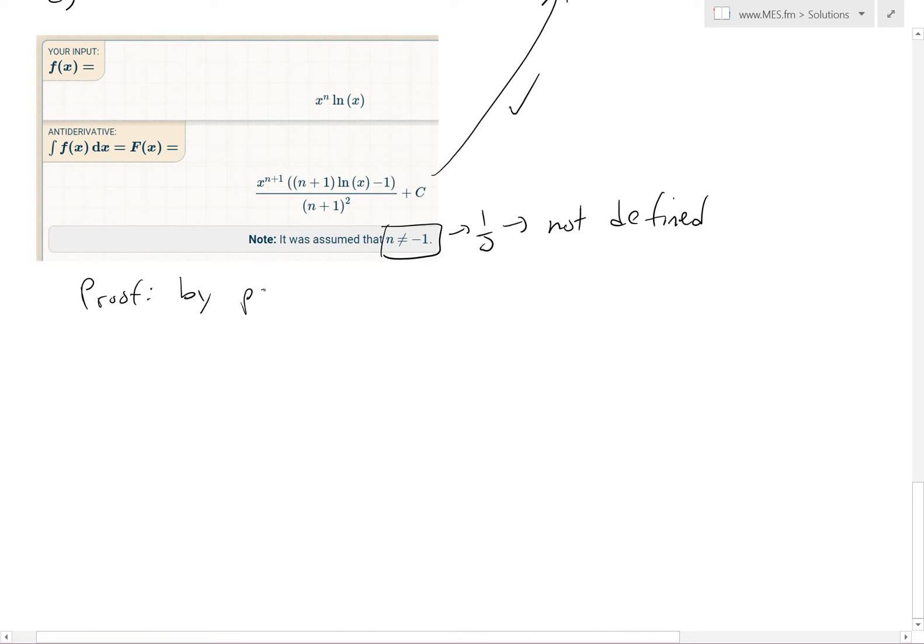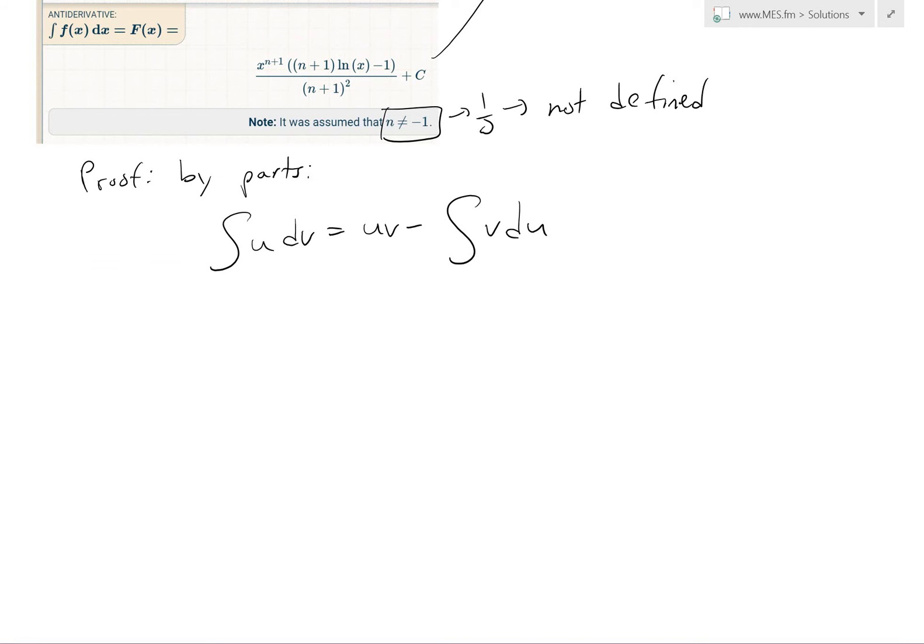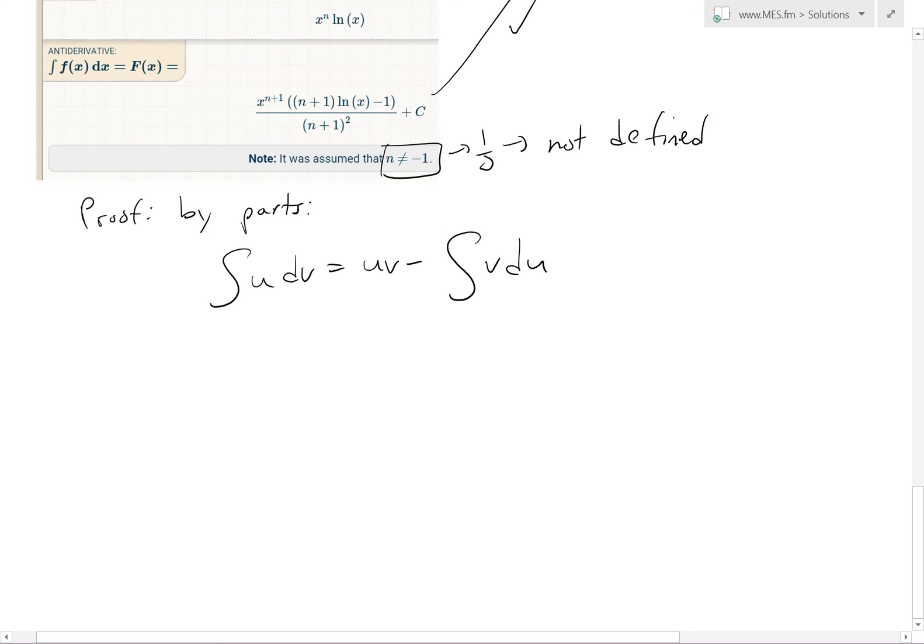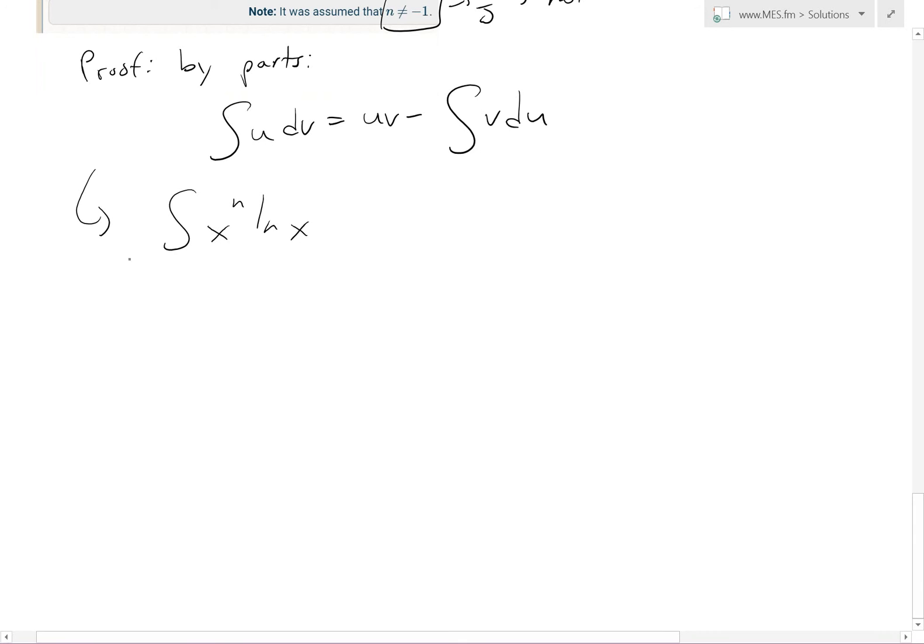So integration by parts, recall that u dv equals to uv minus v du. And you can see a video link below in my earlier video on by parts to get a better understanding of this. So if we have this, now when we look at the function, integral of x^n ln x, in this case what we're going to do is let,